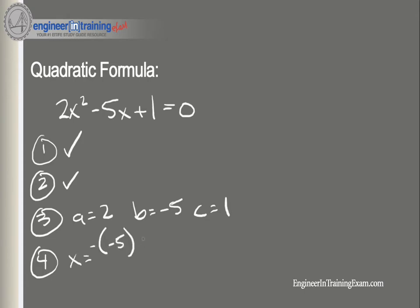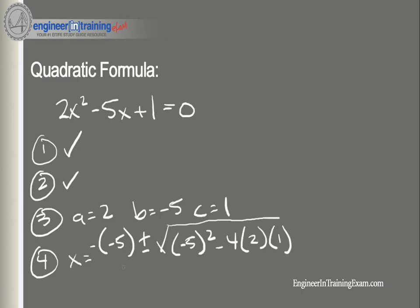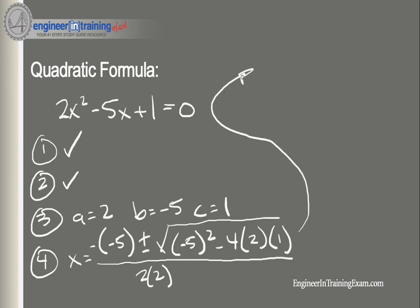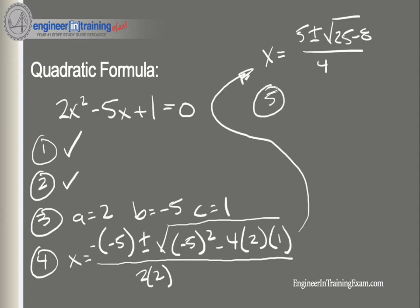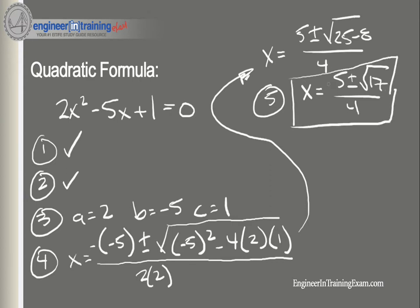Plugging in, we get the negative of negative 5, plus or minus the square root of negative 5 squared minus 4 times 2 times 1, all over 2 times 2. Simplifying, x equals 5 plus or minus the square root of 25 minus 8, divided by 4. This gives us x equals 5 plus or minus the square root of 17, divided by 4. Those are our two solutions.